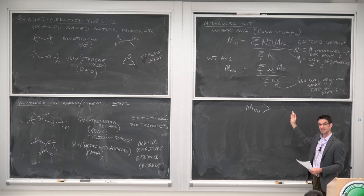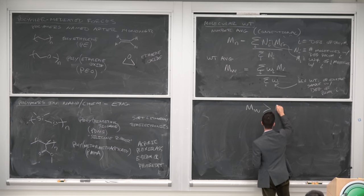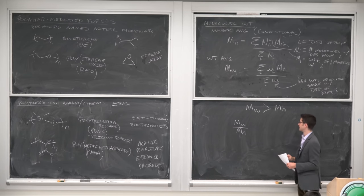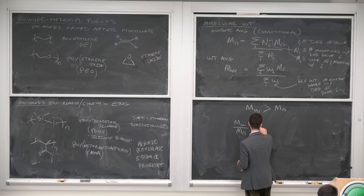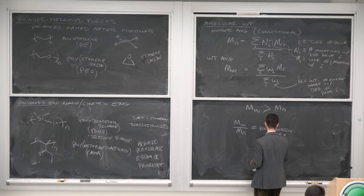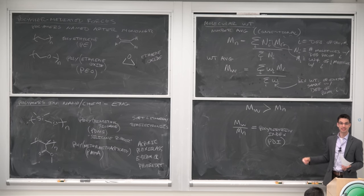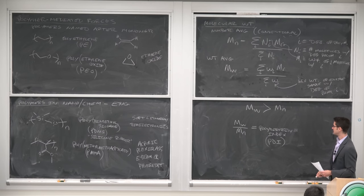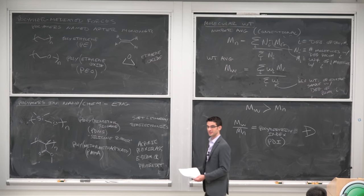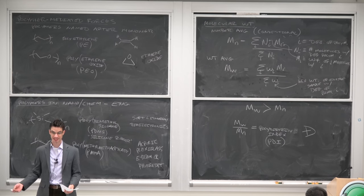If you work with the definitions, Mw is always greater than Mn. Dividing Mw by Mn gives a quantity greater than one, called the polydispersity index, or PDI — now officially called dispersity, D-bar, by IUPAC, because if something is already disperse, calling it polydisperse adds nothing.